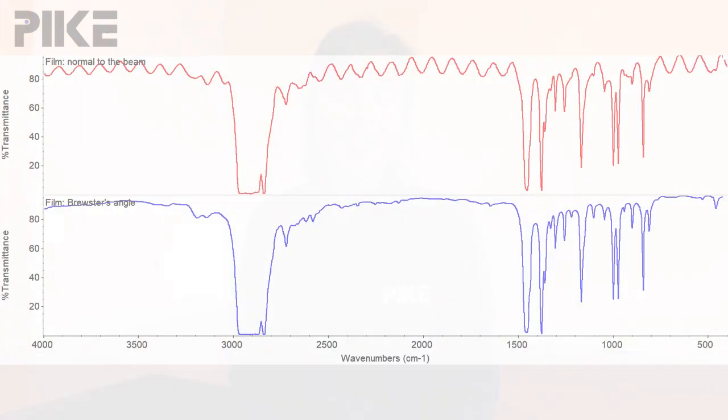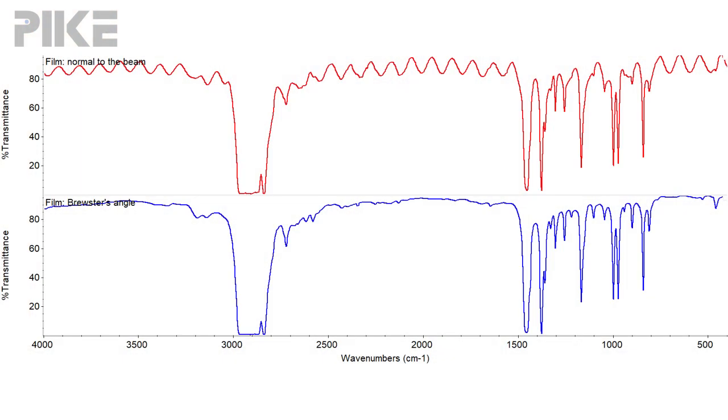Next, let's take a comparison of measurements made at normal angle versus Brewster's angle, and you can see I was able to completely eliminate the fringing.